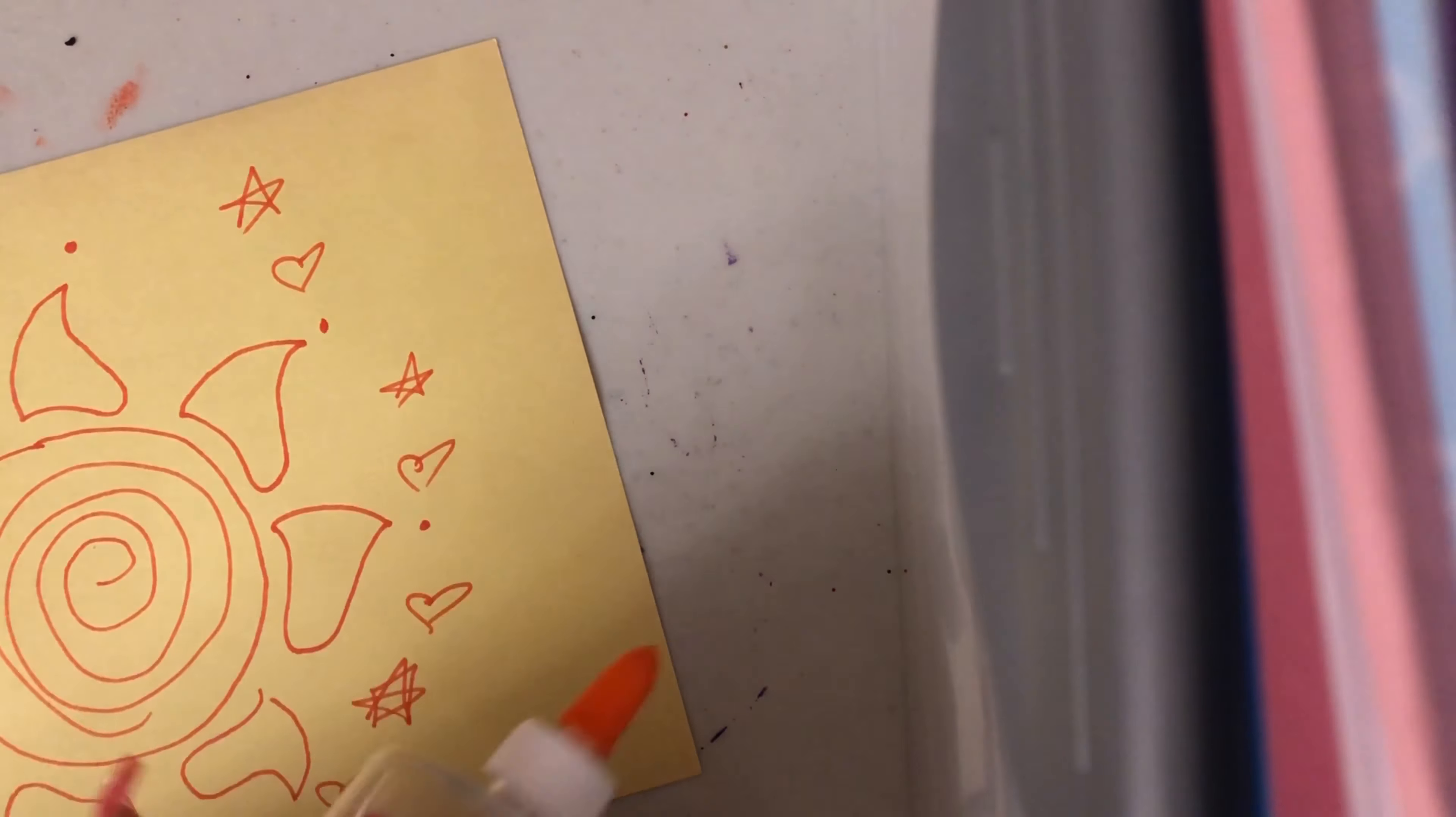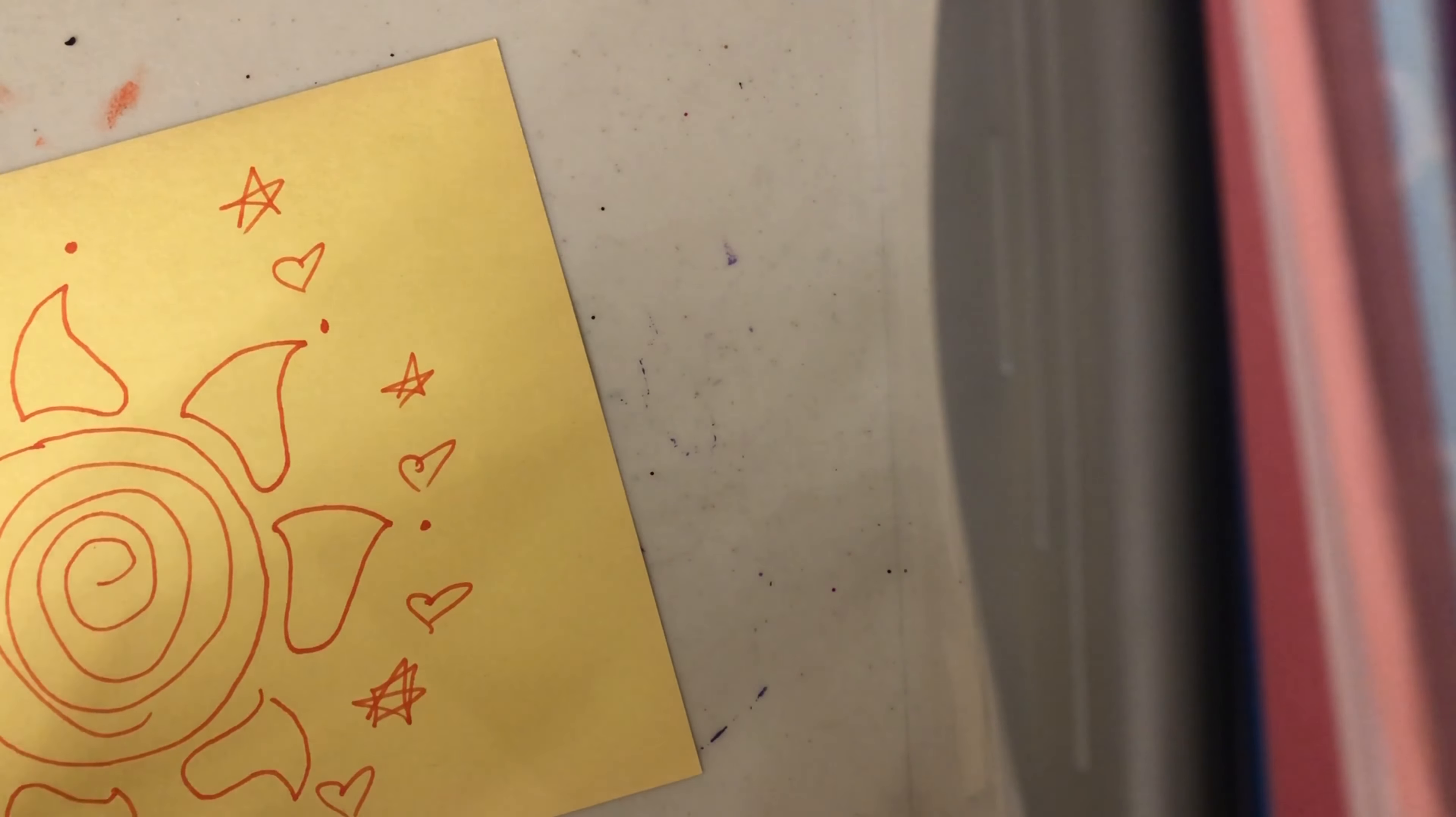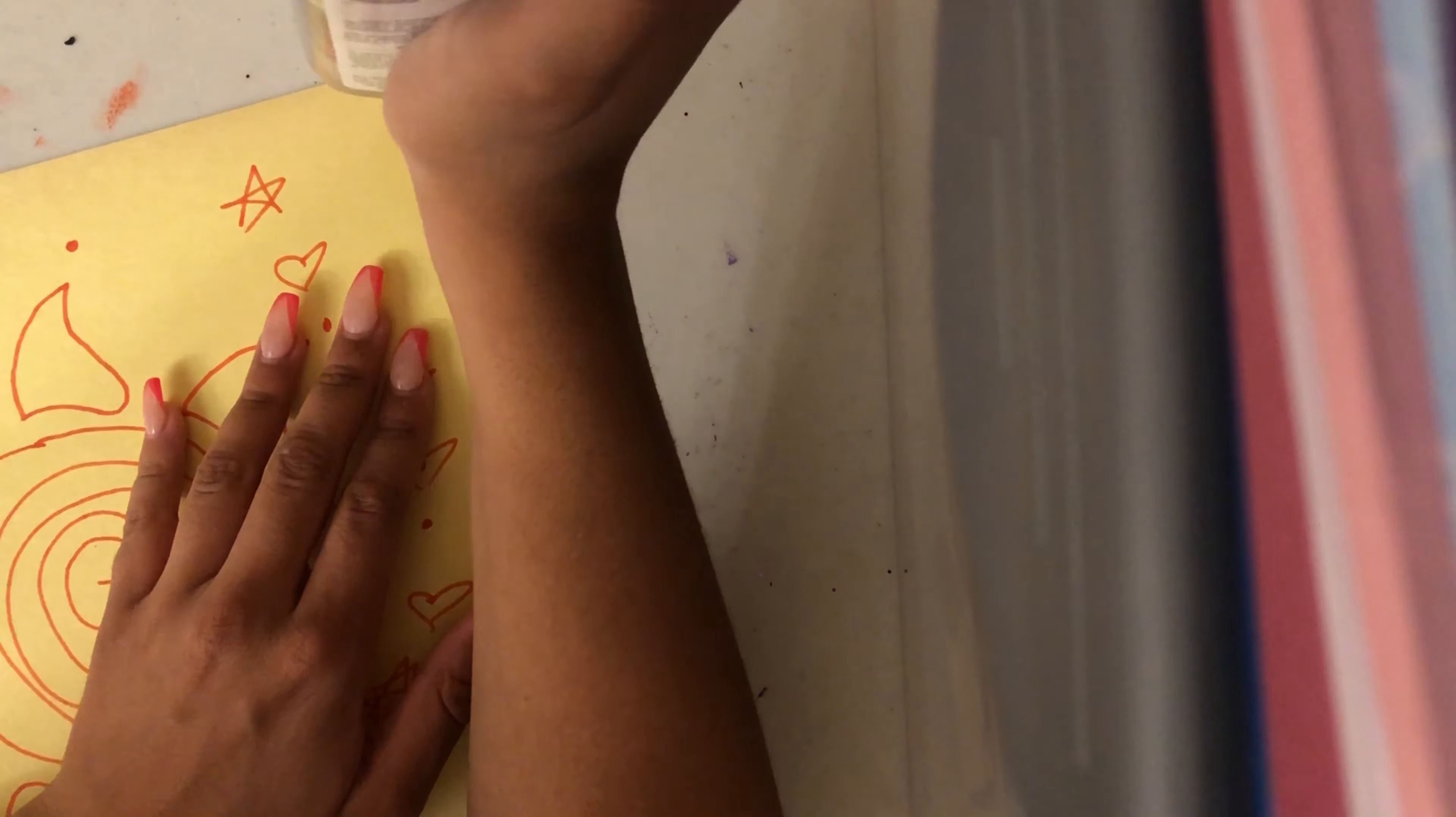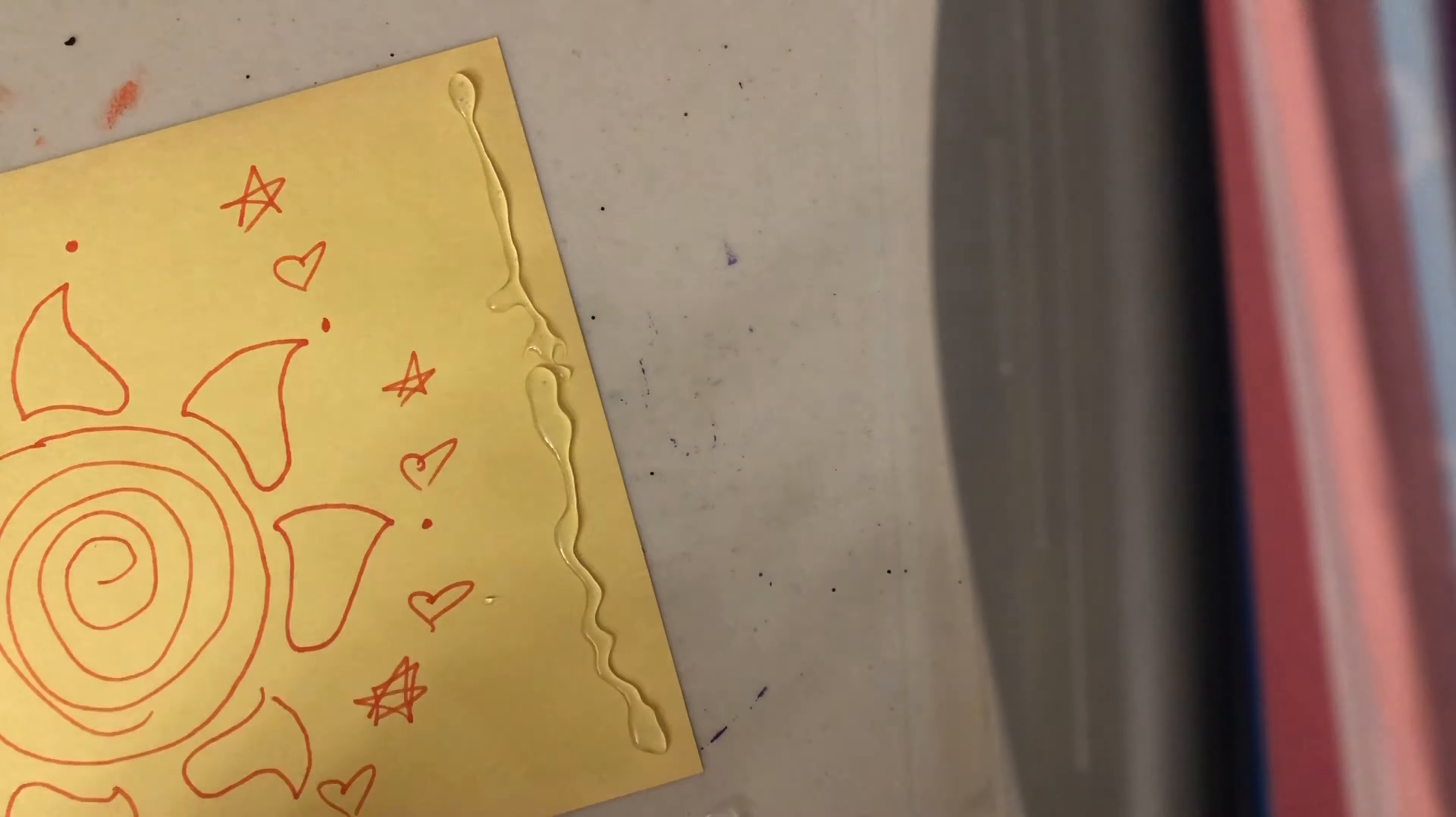You're going to take some craft glue and put it on one edge of your paper, and then you're going to roll it up and stick both ends together so it forms a cylinder shape.